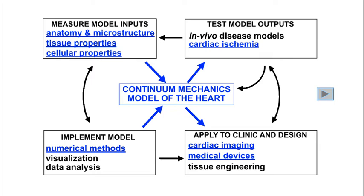Let's examine an example of this interplay between theory and experiment by looking at the mechanics of the heart. In order to formulate our continuum mechanics model of the heart, we'll need to measure inputs including the anatomy and microstructure, the mechanical properties of the tissue, and the mechanical properties of the cells. We require computational techniques such as numerical analysis, visualization, and data analysis to implement and solve the model. And then to test the model predictions, we need to validate the results using physiological measurements in vivo, such as in a disease model of the ischemic heart.